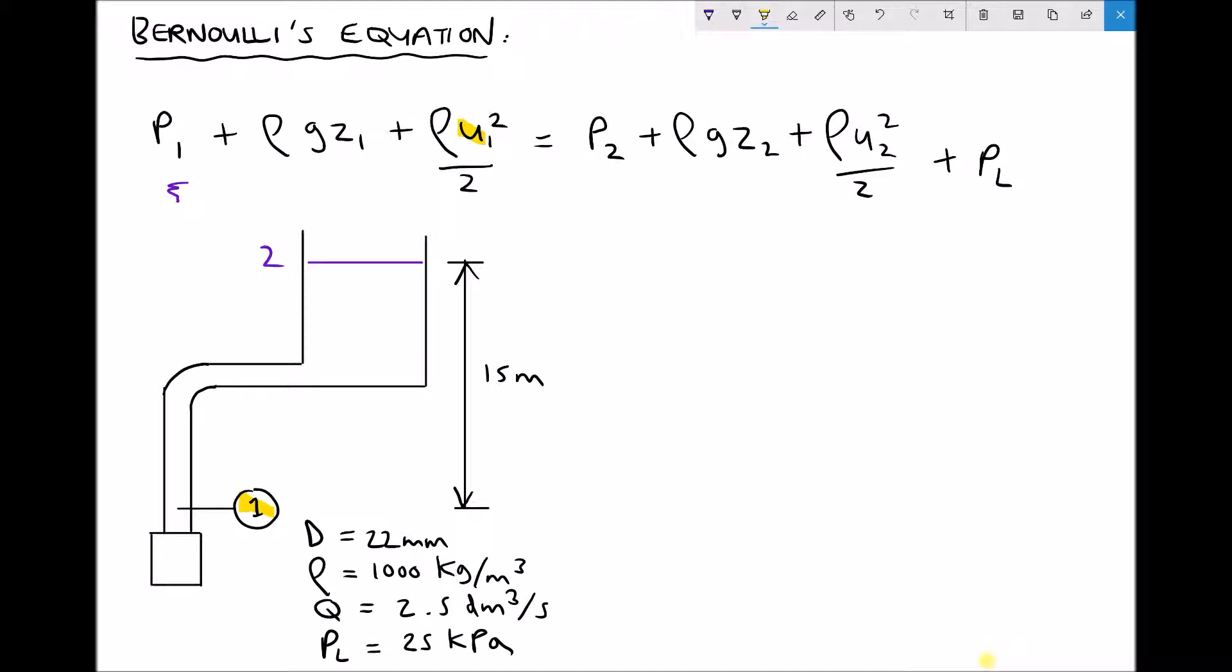On the right hand side we have those three terms repeated except this time we have subscript 2. The reason we have subscript 2 is because we're referencing another position within the system. So in this example we're referencing the fluid level in the top of this header tank. We then have density times gravity times elevation at point 2 and this time we are going to have an elevation.